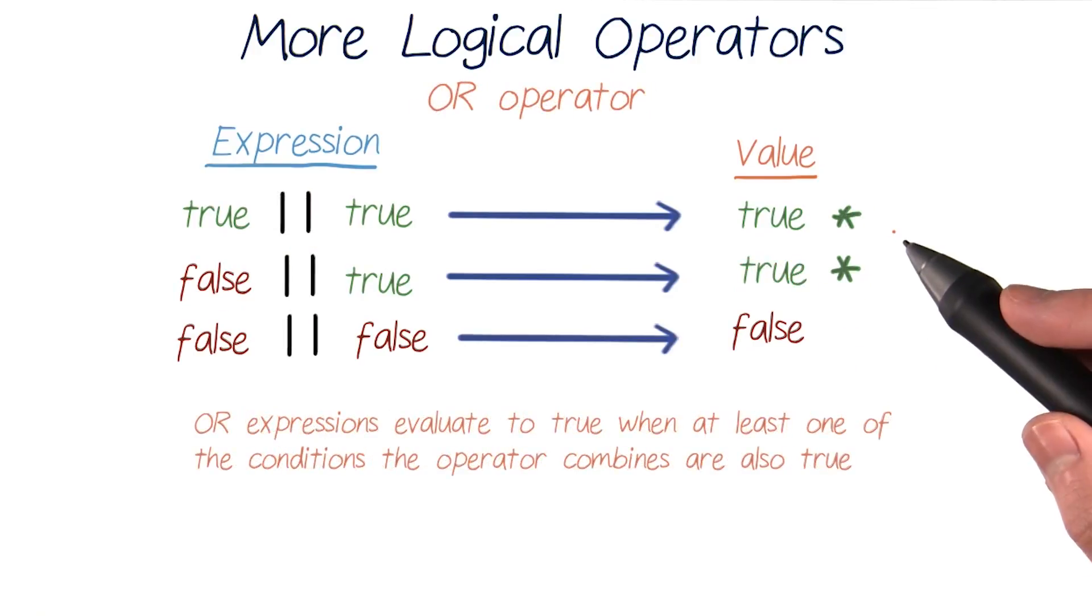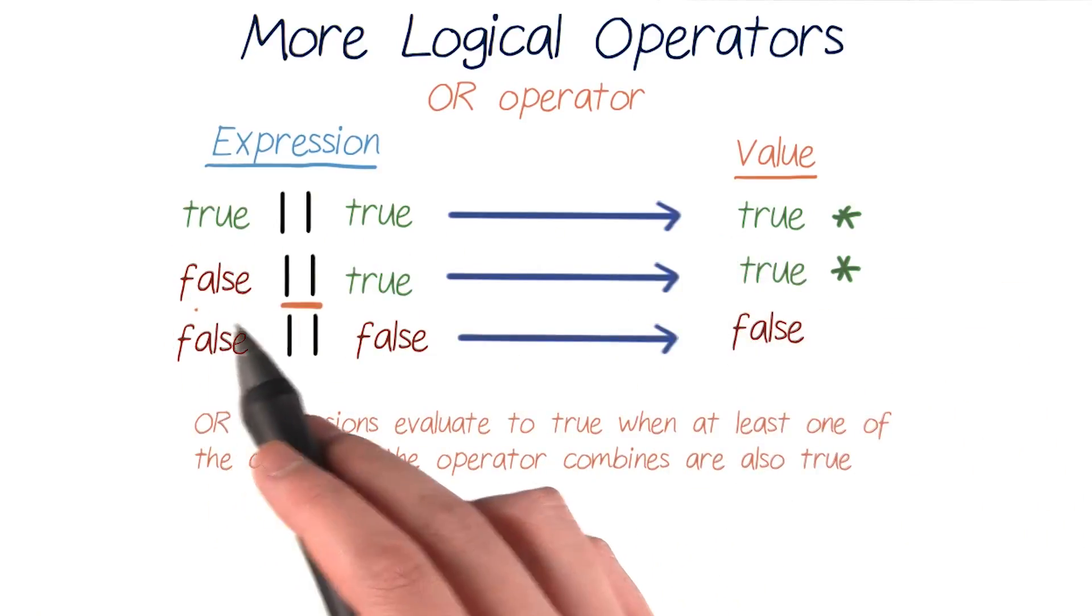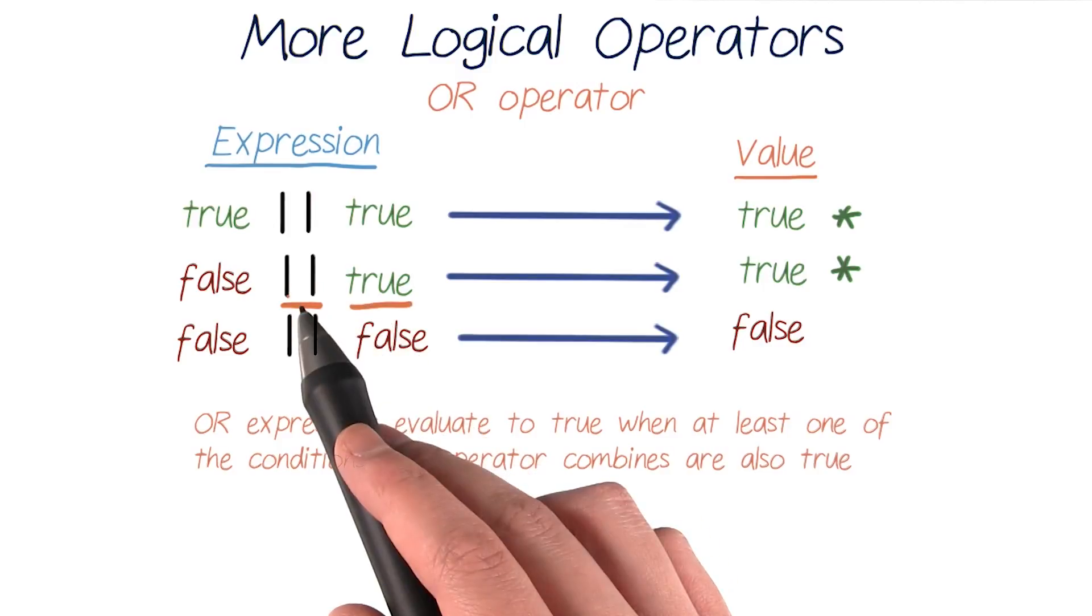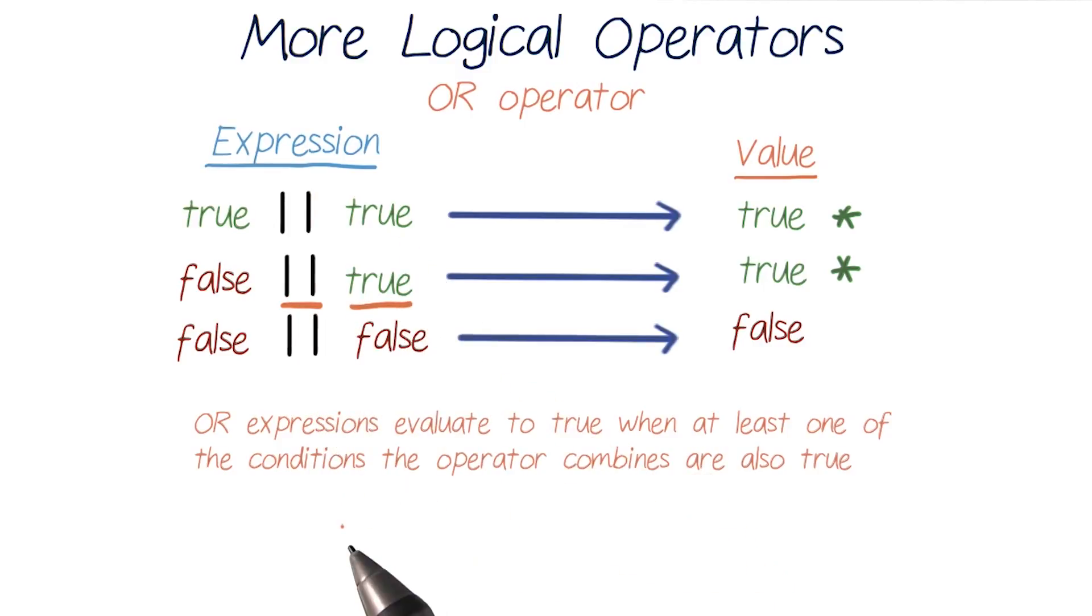The or operator is a little different. The or operator only needs one of its two combined conditions to be met for it to be true. So true or true evaluates to true, and so does false or true. That's because at least one of its combined expressions is true in both cases. Only if both conditions it combines are false will this whole expression be false.